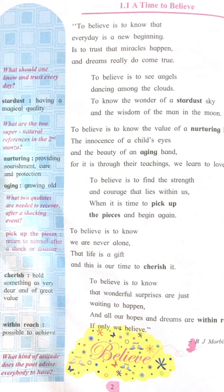The final stanza: 'To believe is to know that wonderful surprises are just waiting to happen, and all our hopes and dreams are within reach, if only we believe.' Finally, the poet says to believe means to know that wonderful surprises are just waiting to happen, and all our hopes and dreams are well within our reach. All we must do is have a positive approach towards life. The most important thing is we must believe in ourselves. Life is full of surprises — if we stay positive, good things will happen. So what we learn from this poem is: we must have a positive attitude and believe in ourselves.